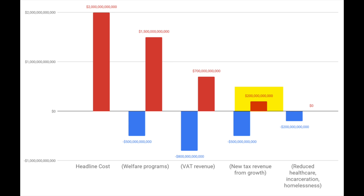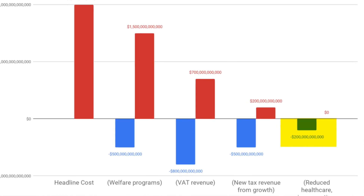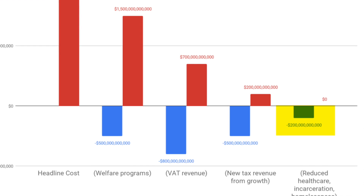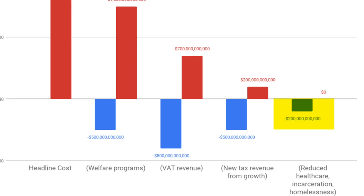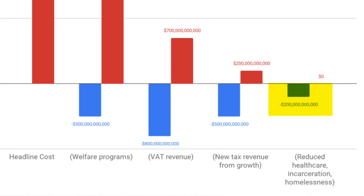The last $200 billion, he thinks you get back through reduced healthcare costs, reduced incarceration, reduced homelessness, increased productivity, and improved mental health. All of these things are worth a couple hundred billion. And so that's how you get to zero.